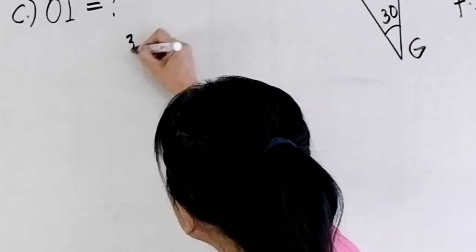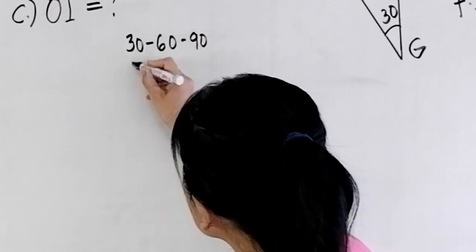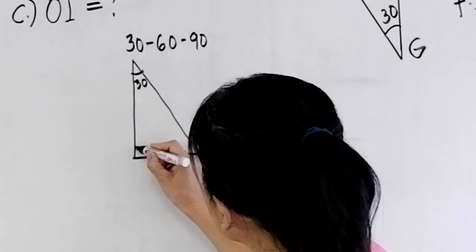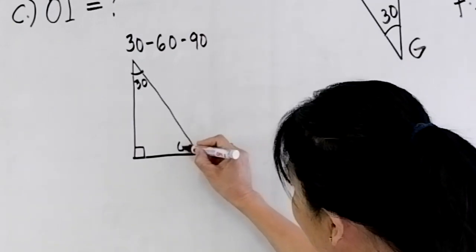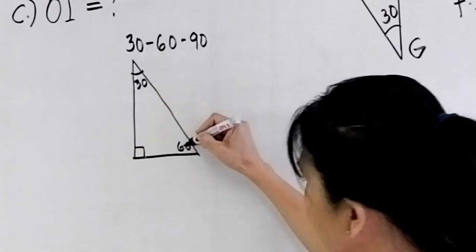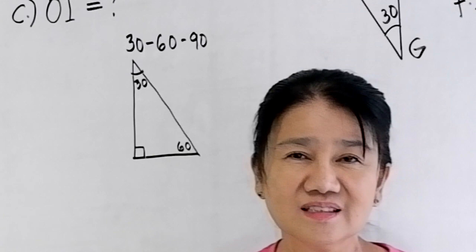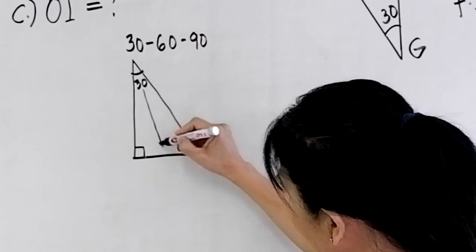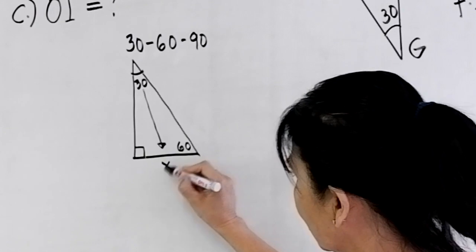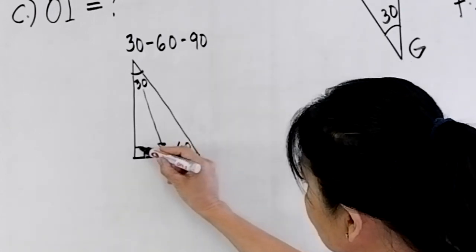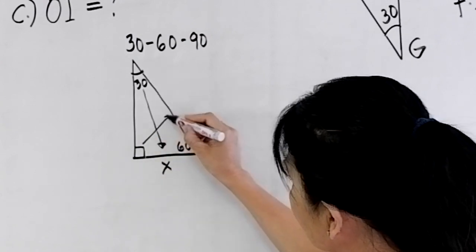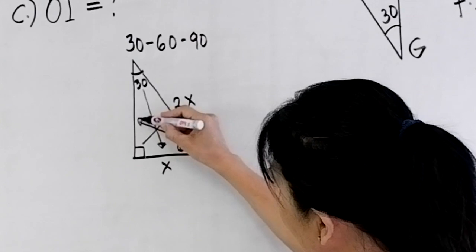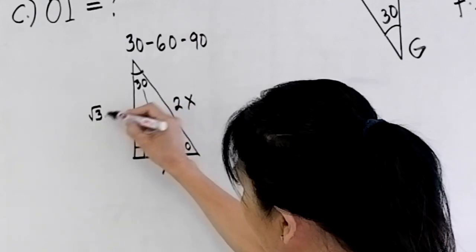Whenever you have a 30-60-90 triangle, for example, it will look like this. So if this is a 30-degree angle, this is the 90-degree angle, and this is the 60-degree angle, when you add them — 30 plus 60 is 90, plus 90 is 180. Remember, the sum of the angles of a triangle is always 180. The side opposite the 30-degree angle is what we let to be X. The side opposite the 90-degree angle is 2 times X. And the side opposite the 60-degree angle is square root of 3 times X.